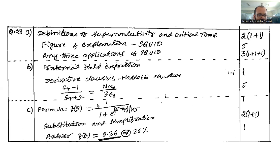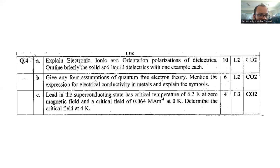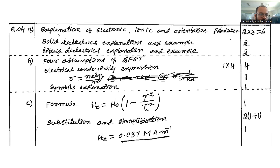Question number 4: Explain electronic, ionic, and orientation polarization of dielectrics. Outline briefly the solid and liquid dielectrics with one example. Weightage is 10 marks. You have to include all the points: explanation of electronic, ionic, orientation, two into three is six marks, solid dielectric explanation two marks, liquid dielectrics with suitable example. For example water is a liquid dielectric, mica is a solid dielectric.